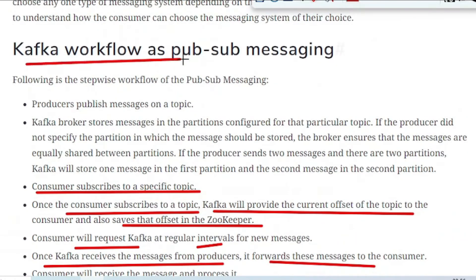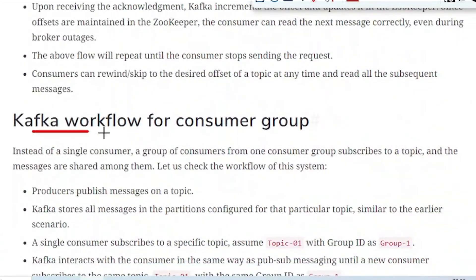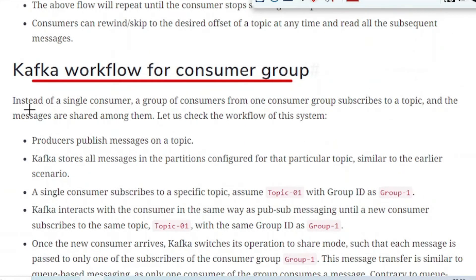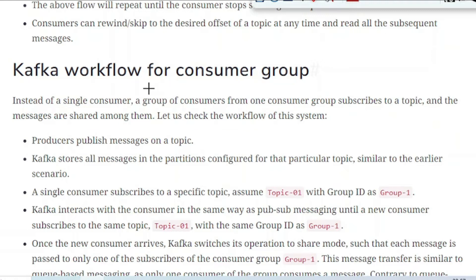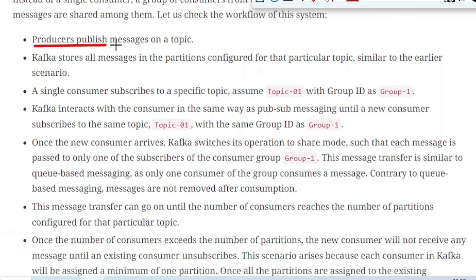Those are the Kafka workflow steps as a publish-subscribe messaging system. Now let us see the Kafka workflow for the consumer group. Here, instead of a single consumer, a group of consumers from the consumer group can subscribe to a topic and the messages are shared among them. The first step — the producer publishes a message on the topic, then Kafka stores all the messages in the partitions configured for that particular topic, similar to the earlier scenario.